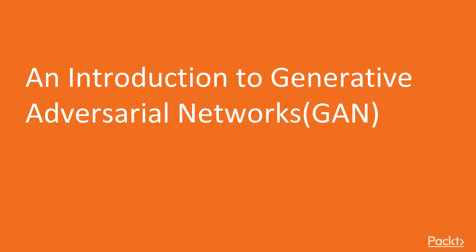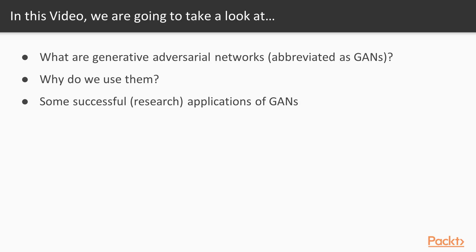Our first video is going to be an introduction to generative adversarial networks. In this video we're going to have a look at what generative adversarial networks are — they're going to be abbreviated as GANs — why do we use them, and some successful applications of GANs on real-world data. Keep in mind that most of the applications are actually very focused on research, because GAN is a very new domain of application.